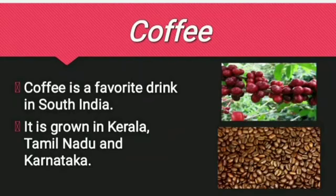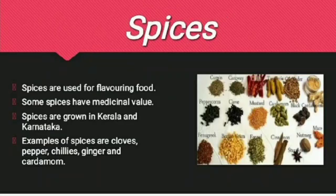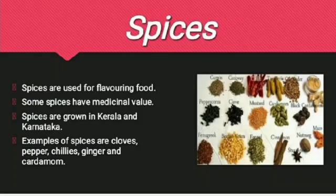Coffee is a favorite drink in South India. It is grown in Kerala, Tamil Nadu, and Karnataka. Spices are food items that add flavor to our food. Spices are grown in Kerala and Karnataka. Examples of some spices are cloves, pepper, chillies, ginger, and cardamom.